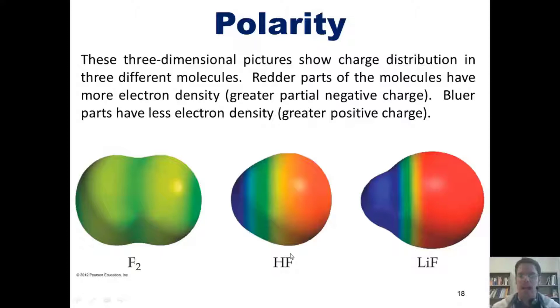In hydrofluoric acid, which is a covalent compound, the fluorine is much more electronegative than the hydrogen, and thus, the majority of the electron density winds up on the fluorine side of the molecule, leaving a very strong partial positive charge on the hydrogen side.